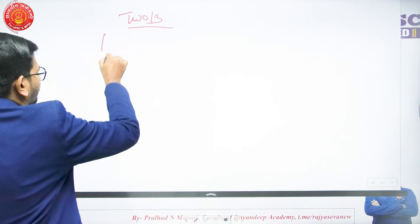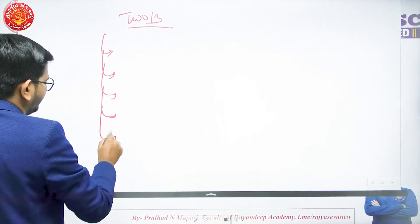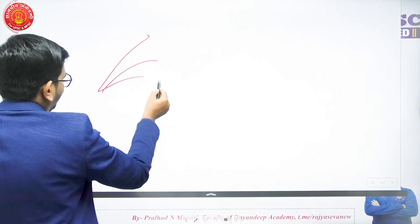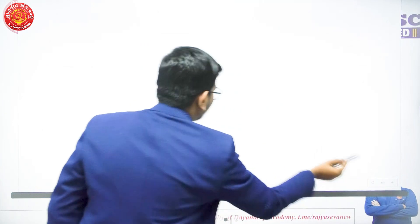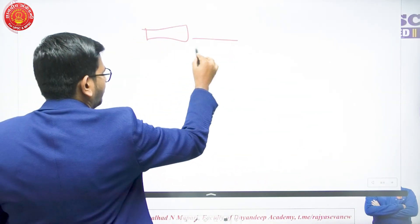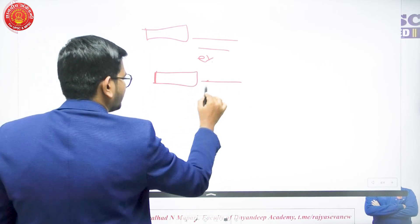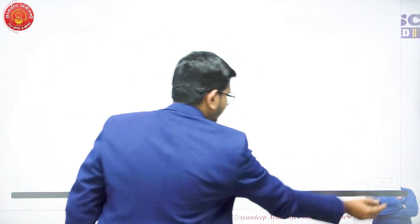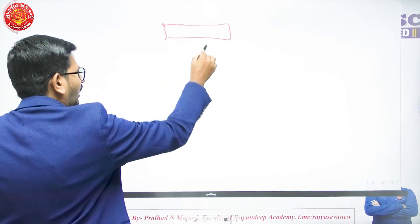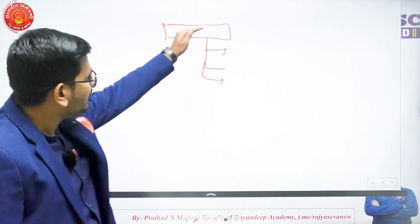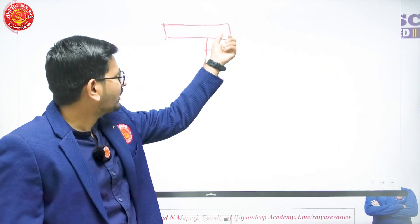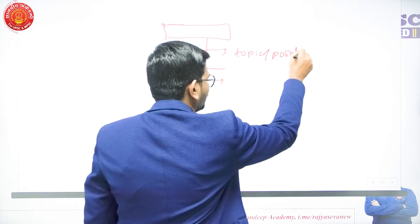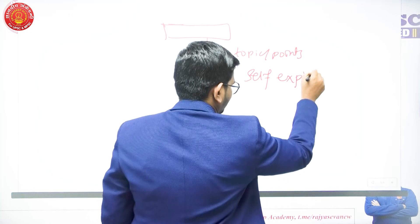We have also studied that there are mainly two to three types of answer writing format, particularly for the body. One is to only mention the points. Another is to mention the sub-heading and explain it briefly with an example. Then there is a third method where you write a sub-heading and below it, instead of explaining, you only mention the related topics as self-explanatory points.